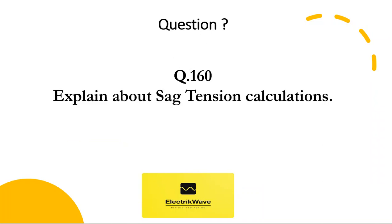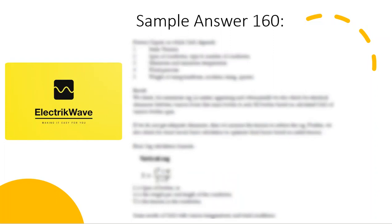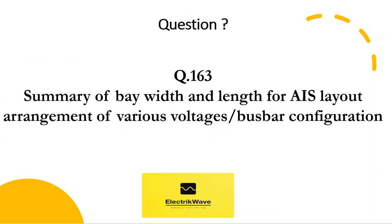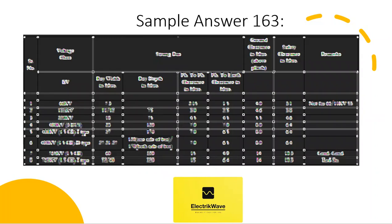Question number 160: explain about sag tension calculations. Question number 163: summary of bay width and length for air insulated substation layout arrangement of various voltages and busbar configurations. Sample answer 163: a summary table is given as a ready reference to answer quickly. The ebook link is given in the description box — download it and get ready for the interview.